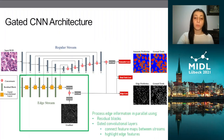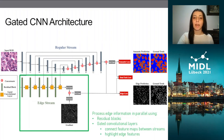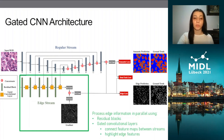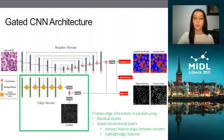Then there's the edge stream, which processes edge information parallel to the regular stream and predicts only boundaries. This uses the image gradients and high-level activations from the regular stream feature maps to process only relevant boundary information, and by using these gated convolutional layers, we can deactivate non-relevant information from the edge stream, including things like noise and non-shape information.